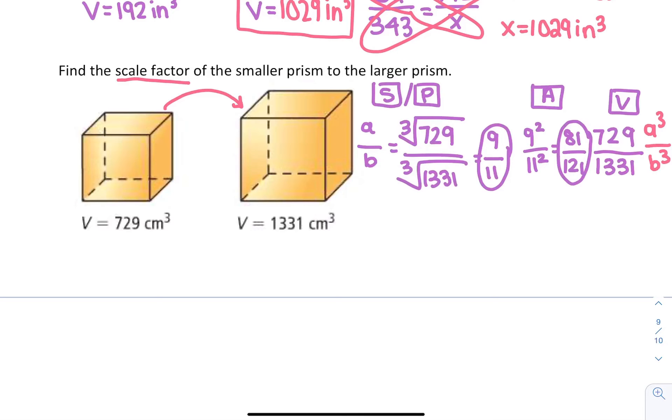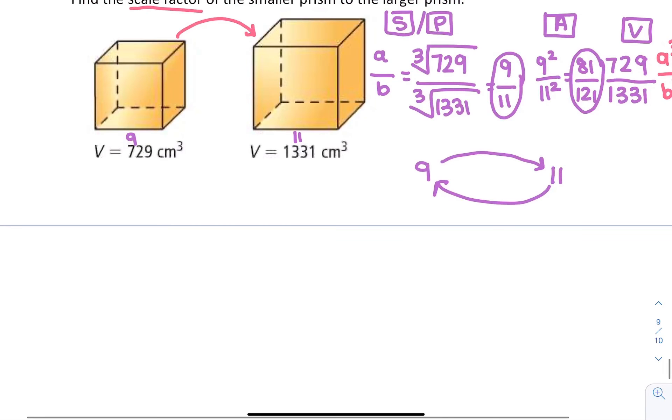To find the scale factor, if we know the ratio of the sides is 9 to 11, we need to figure out how we get from 9 to 11. What you would do is say 9 times what equals 11. You divide both sides by 9. You'd find x is 11 over 9. So our scale factor to get from 9 to 11 is 11 over 9.